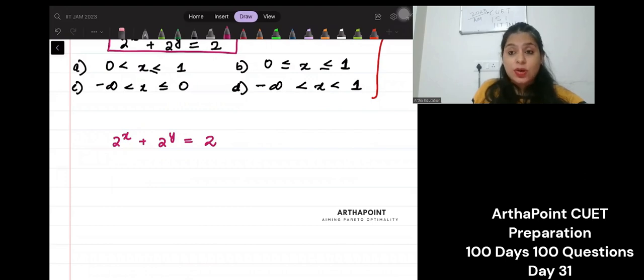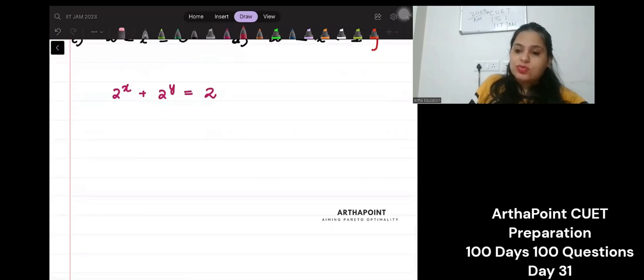Now, I must first go ahead and put y on one side and x on the other side. Let us try to do that. What will I get? 2 to the power y is equal to 2 minus 2 to the power x.